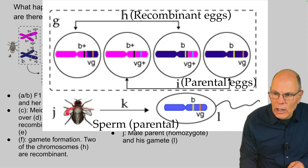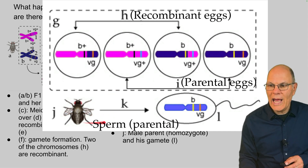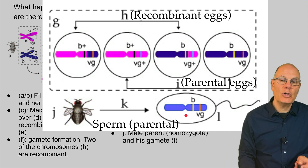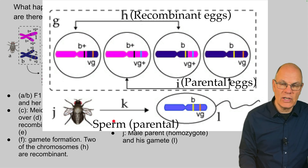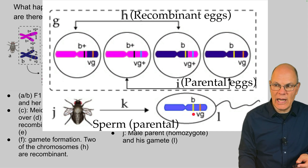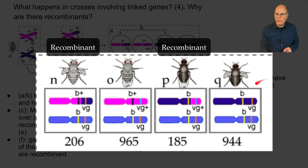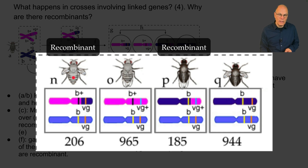The male parent is homozygous, so he can only produce one kind of gamete — one that has B and VG. Offspring N and P have recombinant phenotypes: gray body with vestigial wings, and black body with normal wings — neither of which matched either parent's appearance.